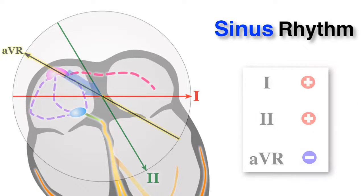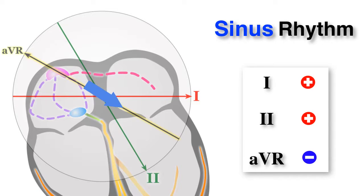There are many different abnormal atrial and ventricular rhythms which exist. Right now, let's just focus on properly understanding and identifying normal sinus rhythm.